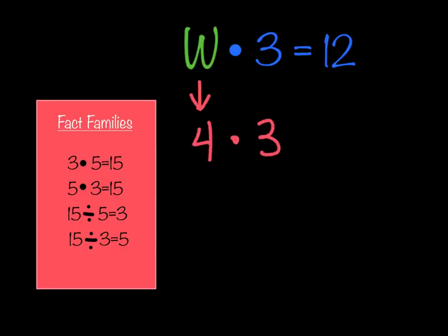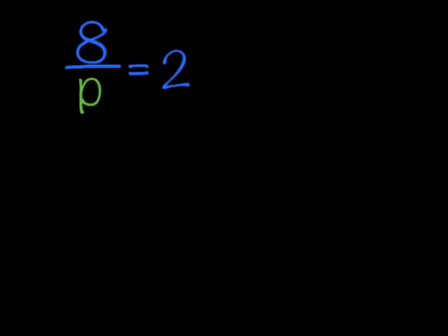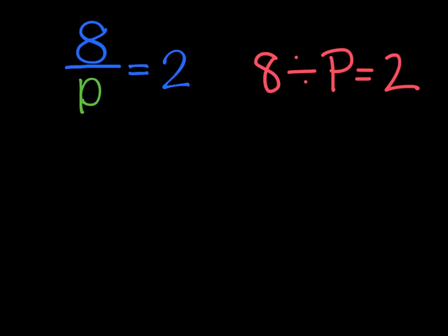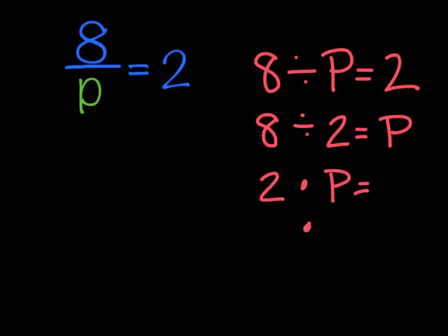Looking back at w times 3 equals 12, I begin with the multiplication members: w times 3 equals 12, then flip-flopped as 3 times w equals 12. Moving to the division portion: 12 divided by w equals 3, and 12 divided by 3 equals w. Only that last one puts w on the other side of the equal sign. So solving 12 divided by 3 gives me 4, meaning w equals 4. To verify: 4 times 3 equals 12 — that's true, so that must be my answer.